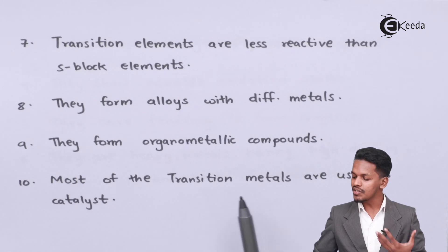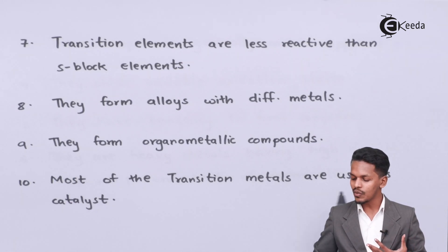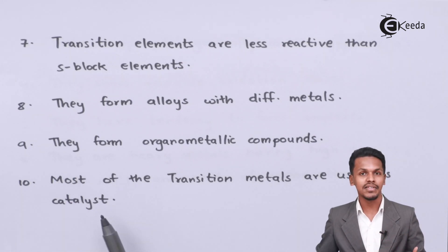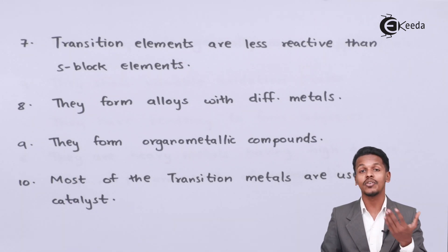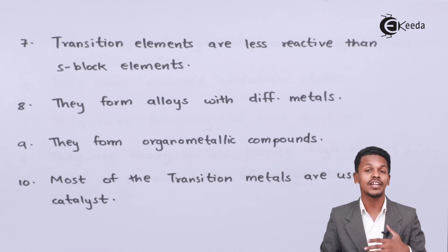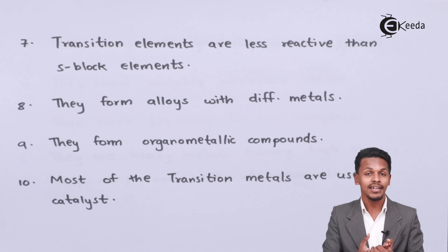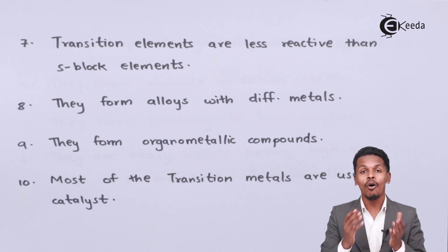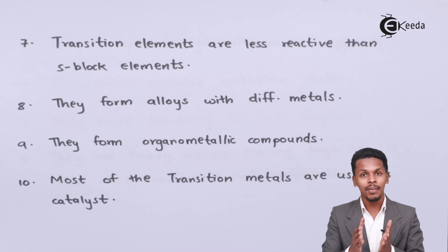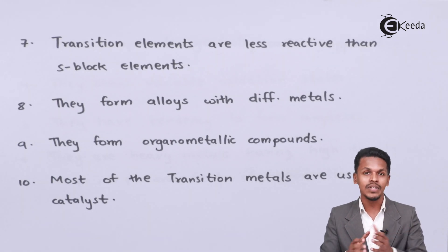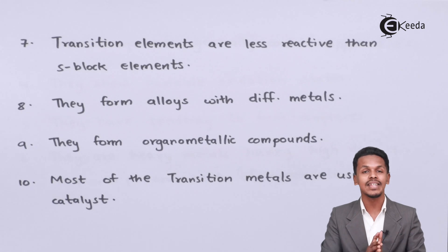Most of the transition metals are used as catalysts — whether it could be nickel, cobalt, or iron. These elements, along with their compounds, are used as catalysts.